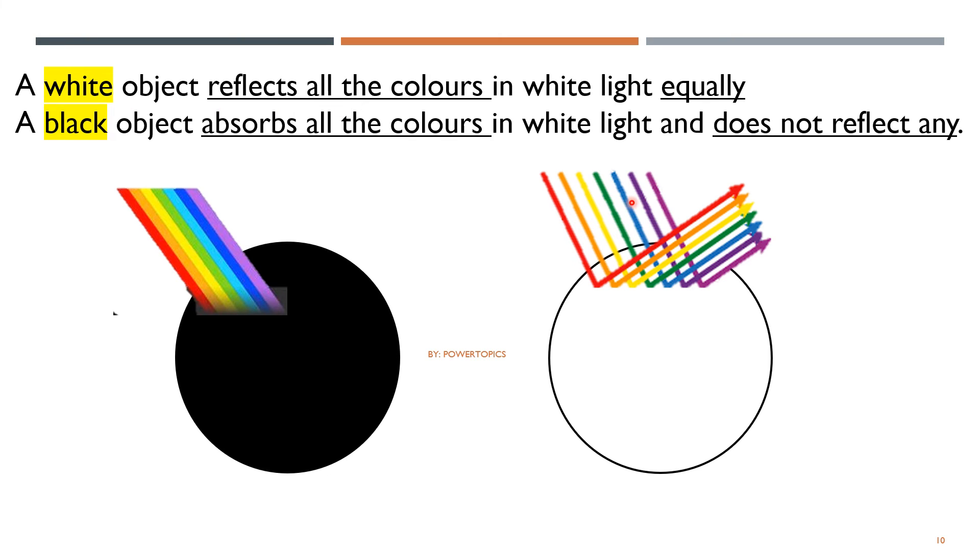A white object reflects all the colors in white light equally, thus it appears white. And a black object absorbs all the colors in white light and does not reflect any, thus it appears black.